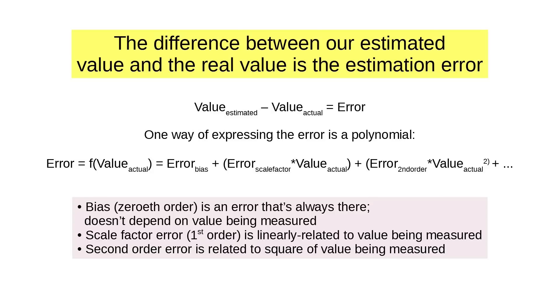The difference between our estimated value and the real value is the estimation error. So here's the value that we estimate here, the actual value, and that is the error. Now one way of expressing error is a polynomial, just a way of expressing a formula. The error is going to be some function of the actual value. And we can equate it to a bias error plus a scale factor error times the actual value plus a second order error times the actual value squared. And you can take this on to third, fourth, fifth if you want to. But usually these three will tell us what we need to know.